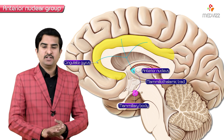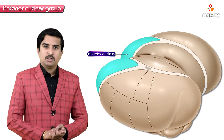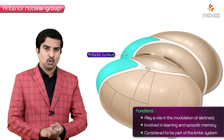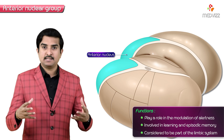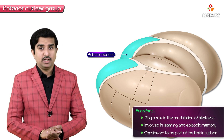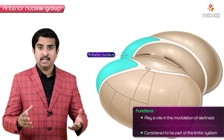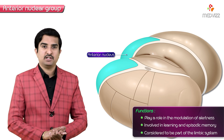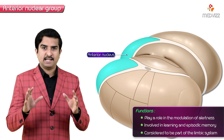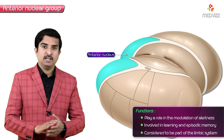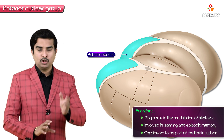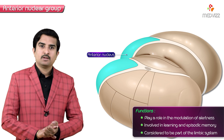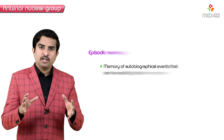The function of these nuclei is thought to include an important role in the modulation of alertness, and they are also involved in learning as well as episodic memory, not only spatial memory. Now, episodic memory is considered to be part of the limbic system.